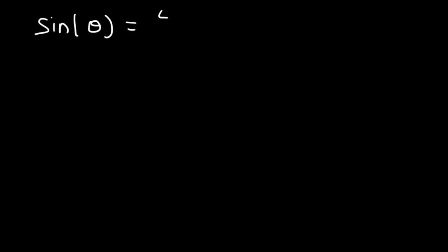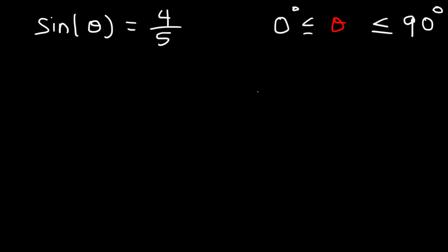Let's focus on the first identity and how we can use it. Let's say sine theta is equal to 4 over 5, and the angle theta is between 0 and 90 degrees. Using this information, what is the value of cosine theta? How can we find the value of cosine?